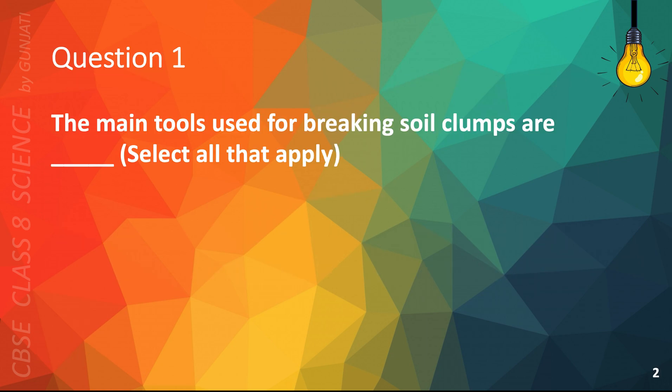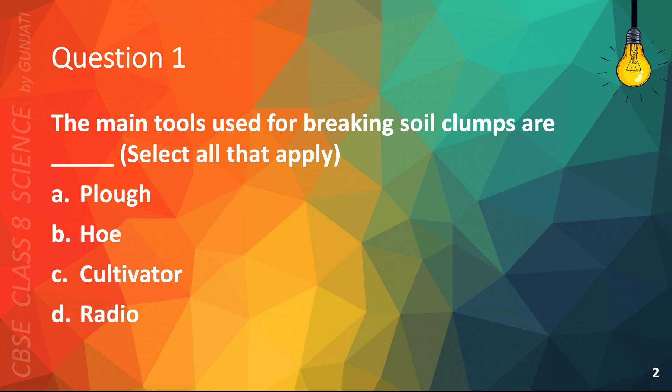Question 1. The main tools used for breaking soil clumps are blank. Select all that apply. A. Plow, B. Hoe, C. Cultivator, or D. Radio.